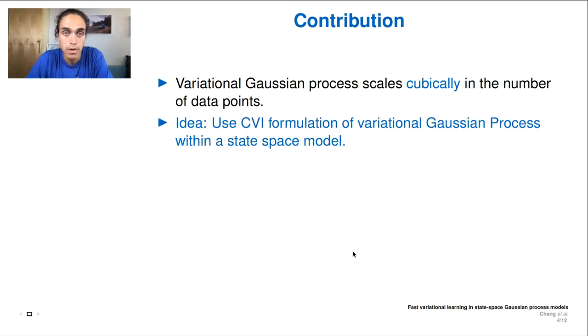The idea in the paper is to use a CVI formulation of the VGP, so conjugate variational inference, which is a slightly different parameterization. And then once we have a different parameterization for the variational parameters, we can perform something known as a state-space model type GP, which is then linear in the number of data points, not cubic.